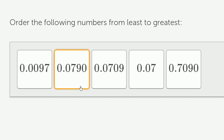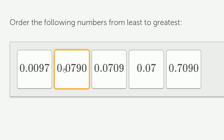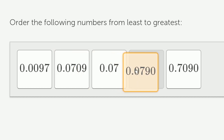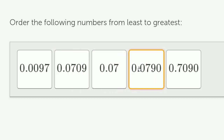So now let's look at the thousandths place. This one has 9 thousandths. This one has 0 thousandths, and this one has 0 thousandths as well. So out of these three, this one is the largest, because it actually had some thousandths.